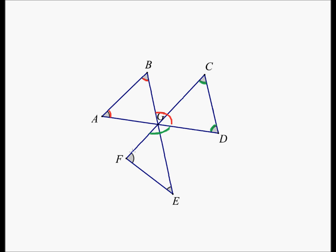Using a very similar argument, this angle plus this angle should add up to this angle. Exact same argument. And if this angle is C, this angle and this angle should add up to 180 minus C, and this angle should also be 180 minus C. Therefore, these two blue angles should add up to this big blue angle here.